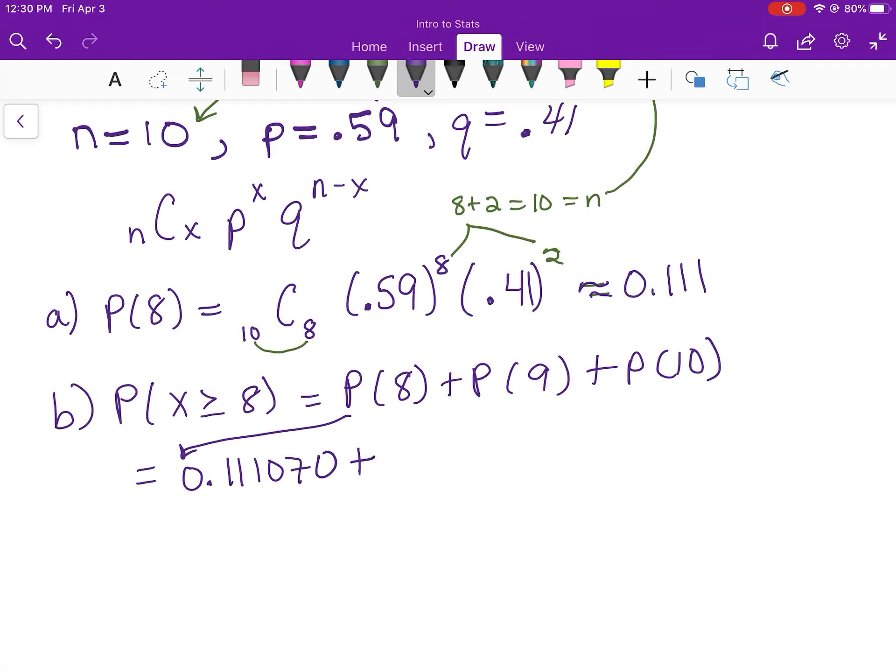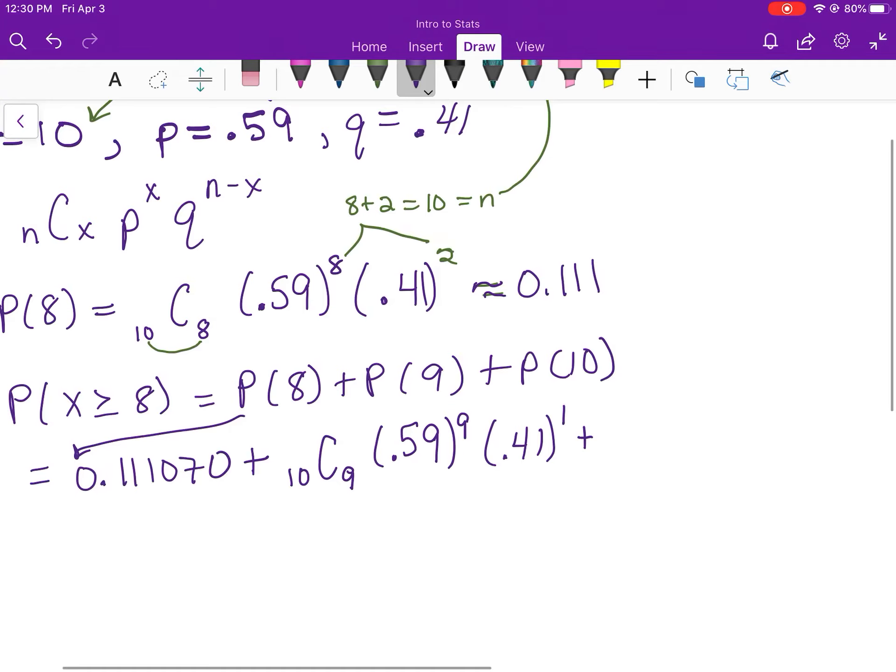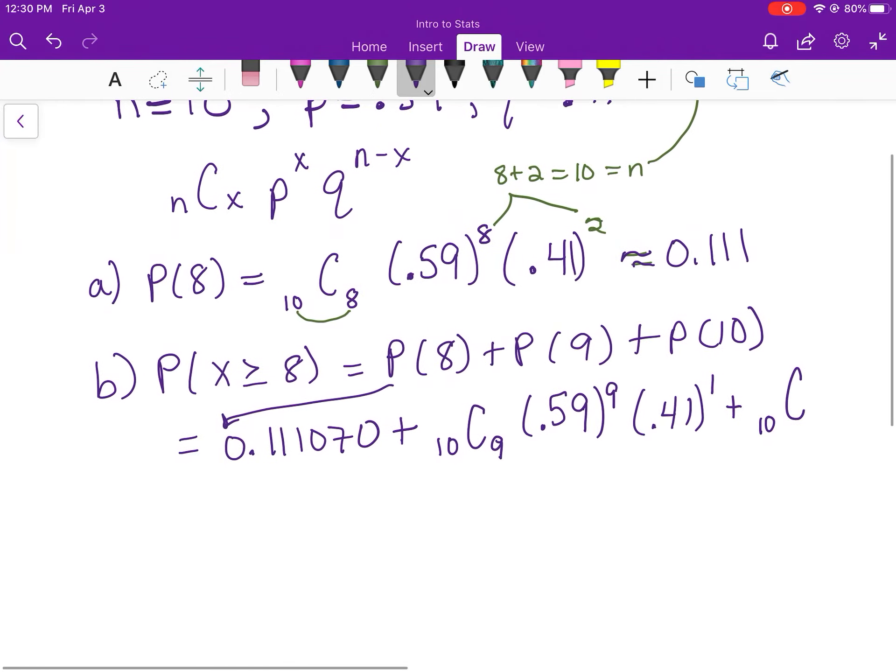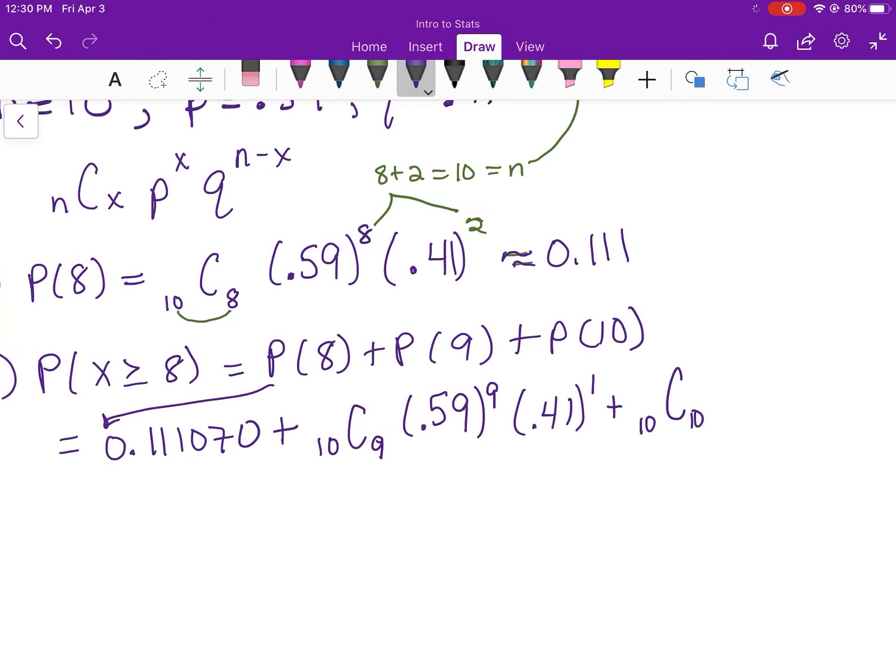The probability of 9: 10C9, 0.59 to the 9th, 0.41 to the first. And then 10C10 for the probability of 10: 0.59 to the 10th, 0.41 to the 0. Again, these exponents have to add to 10.